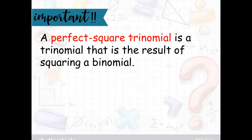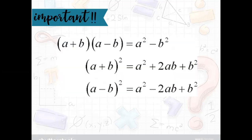A perfect square trinomial. The word trinomial means you will have three terms. A perfect square trinomial is a trinomial that is the result of squaring a binomial. So binomial has two terms — that will be inside the parenthesis written with a square. The answer of that is going to be a trinomial, which is called a perfect trinomial. This part is very important for this lesson. You can take a screenshot, you can write it down somewhere, because the whole lesson is based on these three formulas.